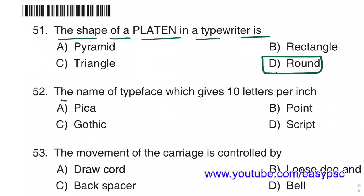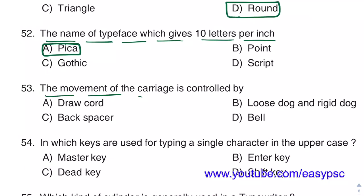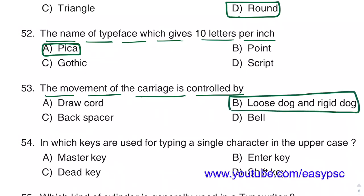The name of the type which gives 10 letters per inch is Pica. The movement of the carriage is controlled by Loose Dog and Rigid Dog.